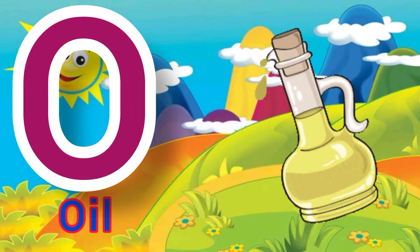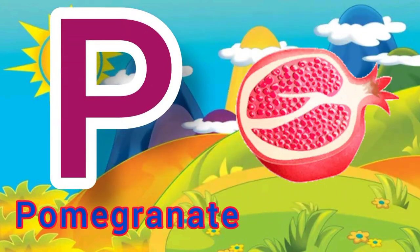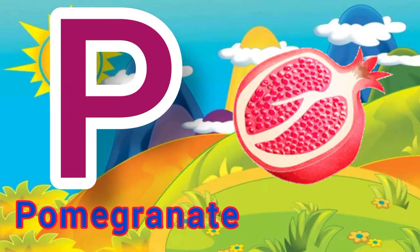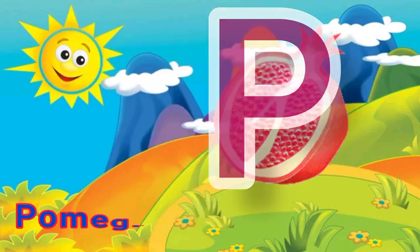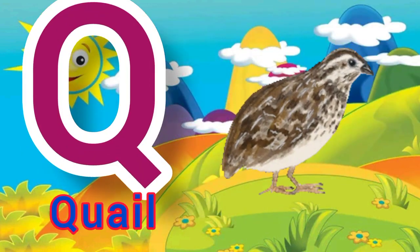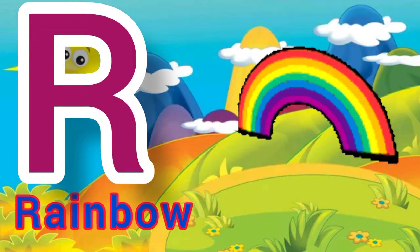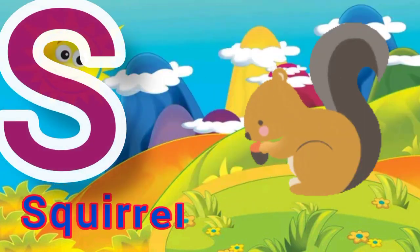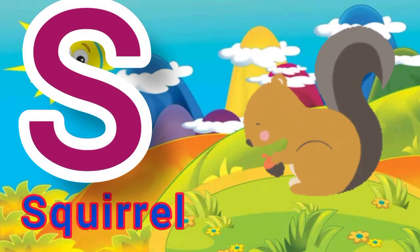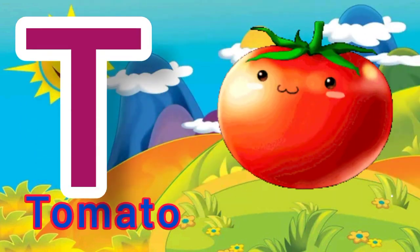P for pomegranate. Q for quail. R for rainbow. S for squirrel. T for tomato.